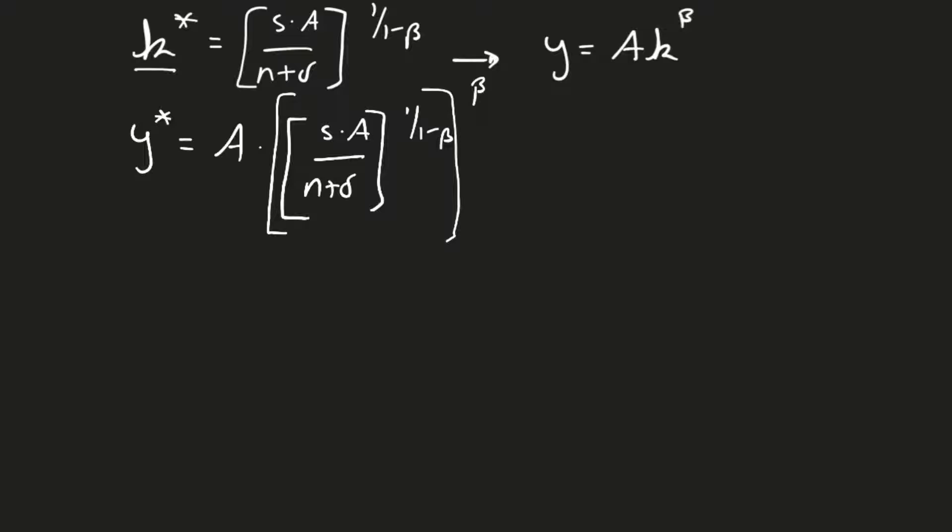What I tell people when they're doing algebra is always take care of the ugly stuff first. So we're going to work outward in. If I have an exponent raised to an exponent, we just multiply those exponents. So I can clean this up a little bit and say y star is going to be equal to a times s times a over n plus delta, all of this is now going to be raised to the beta over 1 minus beta. I'm just taking this and multiplying these two things to bring it in.